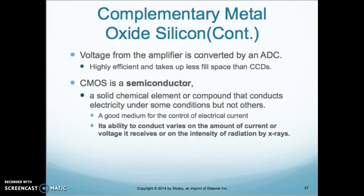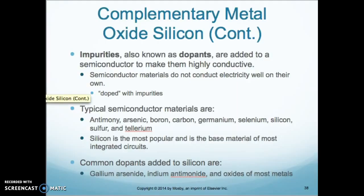So a good medium for the control of electrical current, its ability to conduct varies on the amount of current or voltage it receives, or on the intensity of the radiation. They add impurities, also known as dopants, which are added to the semiconductor to make them highly conductive.